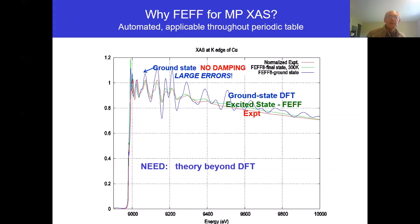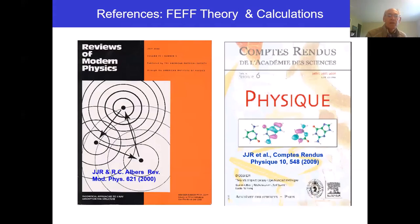Now, the calculations that are in the materials project are described in a couple of publications. One is in Scientific Data, and it really gives a good overview. This is the reference that was published in 2018. The algorithms that are used are basically the parameter-free calculations in FEFF9, and that's described in this PCCP paper, already 10 years old.